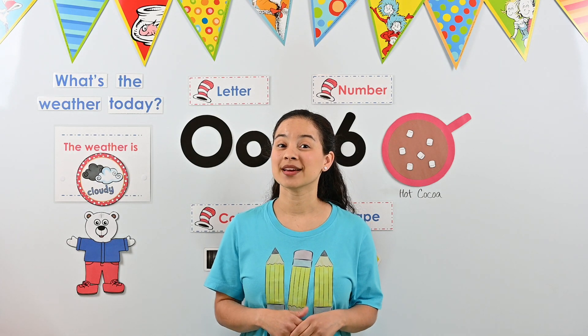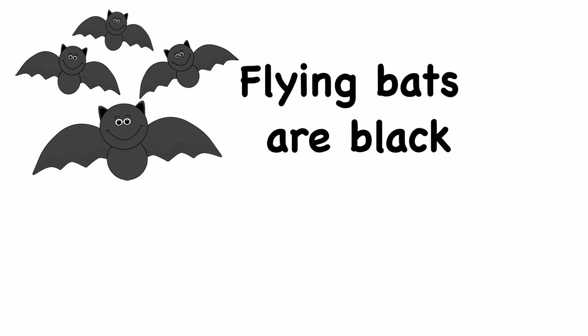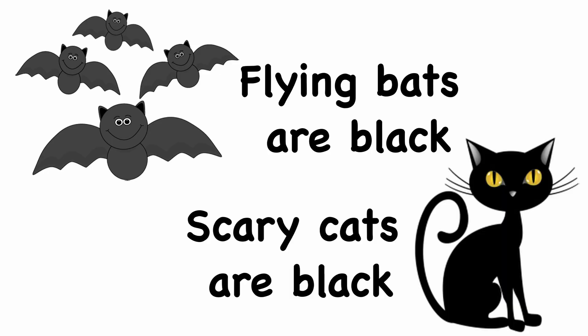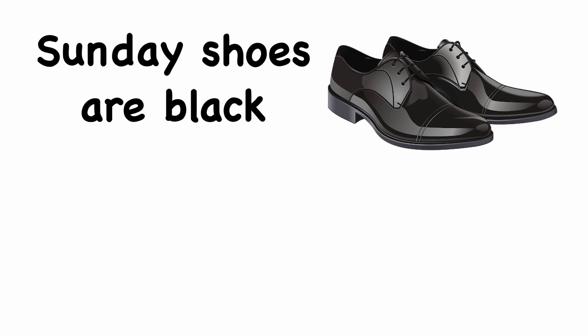We'll sing it one more time. This time you can try to sing it with me if you remember the words. B-L-A-C-K spells black. Flying bats are black, scary cats are black, jelly beans are black — I like black! B-L-A-C-K spells black. Sunday shoes are black, Santa's boots are black. B-L-A-C-K spells black. Awesome work, friends — I really enjoyed singing the black song. We'll sing it again tomorrow.